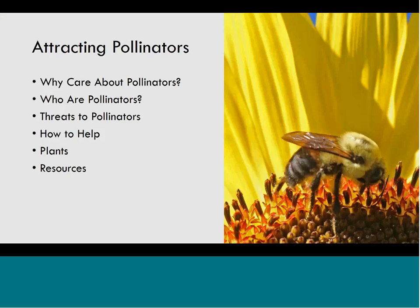To wrap up: pollinators are essential because our food and ecosystems depend on them. They include bees, wasps, moths, butterflies, flies, and beetles. The main threats are habitat loss and pesticides. To help, protect existing habitat, create new habitat, and use pollinator-friendly maintenance practices. Choose plants that bloom in spring, summer, and fall, including woody plants and host plants. Programs like Greener Towns and Bloom Box are great resources for people wanting to support pollinators.